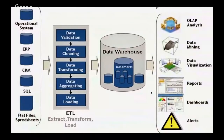You can see a diagram on your screen. This is what the ETL model looks like. At the extreme left you have different kinds of operational systems such as ERP, CRM, SQL, Flat Files, and Spreadsheets. Next to that you have ETL — Extraction, Transformation, and Loading. ETL has a data validation part, data cleaning part, data transforming part, data aggregating part, and data loading part. Everything then moves to the data warehouse. From the data warehouse, it moves forward to OLAP analysis, data mining, data virtualization, data reports, data dashboards, and alert systems.